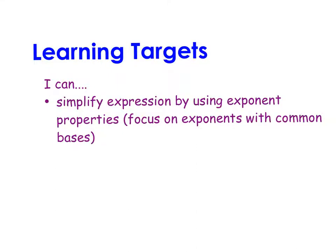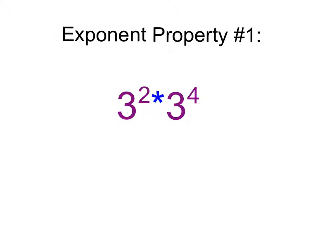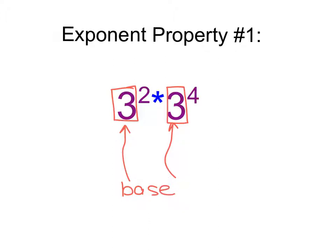In this video, we're going to simplify expressions by using exponent properties, specifically focusing on terms that have common bases and what to do with their exponents when they have common bases and they're being multiplied together. So this first exponent property results from two terms that have the same base — the number not raised to an exponent is called your base — and here we can see common bases being multiplied.